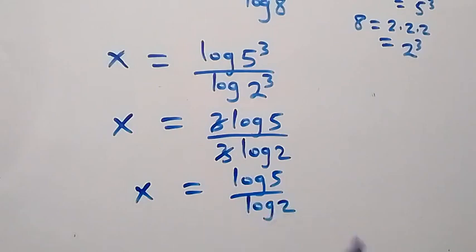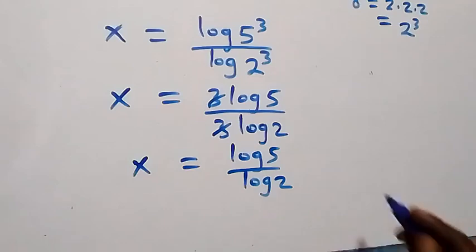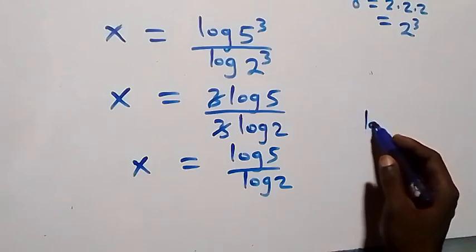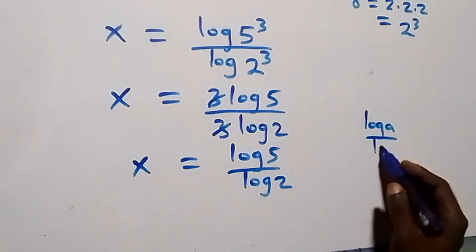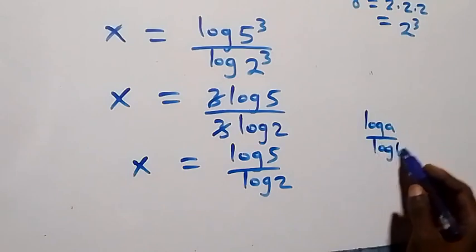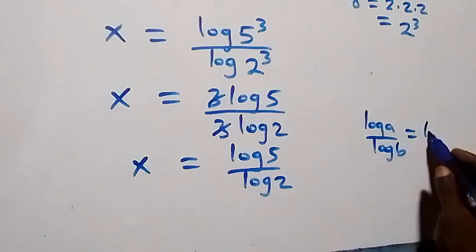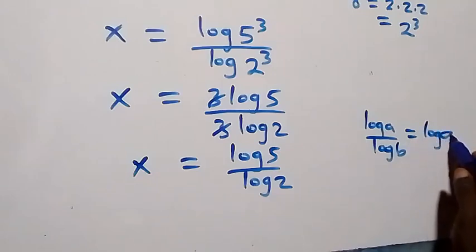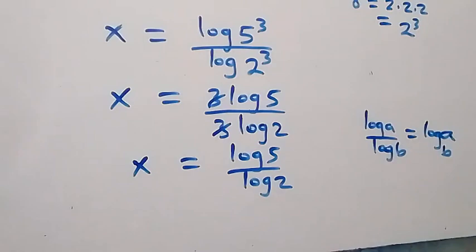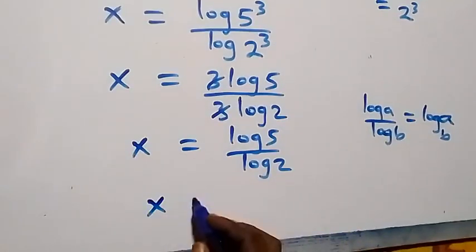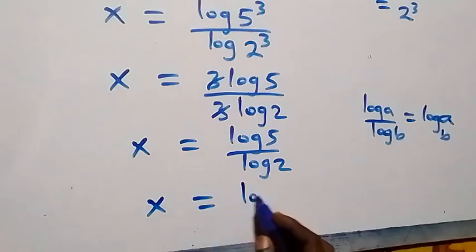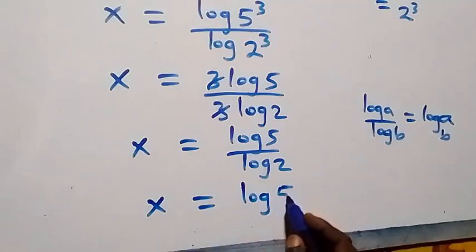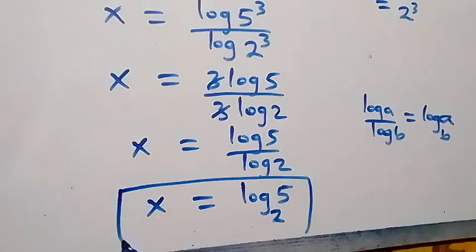Using the change of base formula — log a over log b can be written as log a to base b — we have x equals log 5 to base 2. So the value of x for this given problem is log₂5.